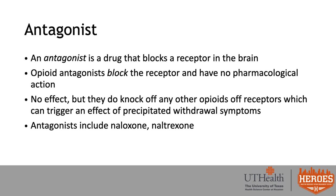An antagonist is a drug that blocks a receptor in the brain. Because they block the receptor, there is no pharmacological action and no effect. They also knock off any opioids already on receptors, and then block those receptors so nothing else can enter. If opioids are already in the body, this triggers precipitated withdrawal — a very uncomfortable shock to the system where the pain relief effect is lost and instant withdrawal symptoms occur. Main antagonists include naloxone and naltrexone.